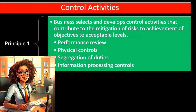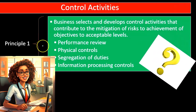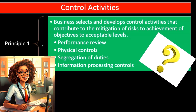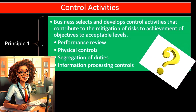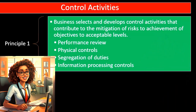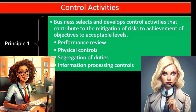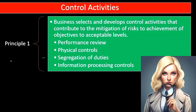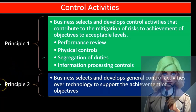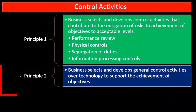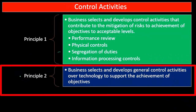The segregation of duties is probably the first thing that should come to mind when you think about internal controls. When setting up audit procedures, if someone asks you about internal controls, the primary area to think of is the separation of duties as one of the major functions of internal controls. Then we have information processing controls. Principle number two: the business selects and develops general control activities over technology to support the achievement of objectives.